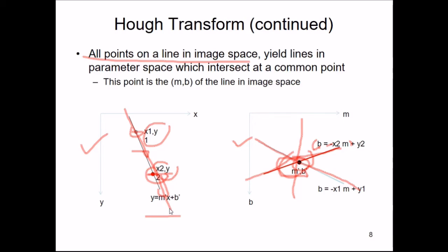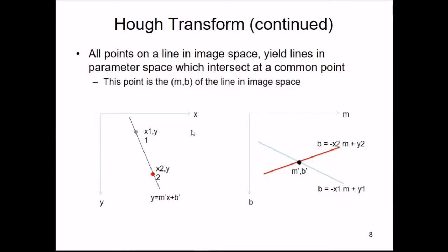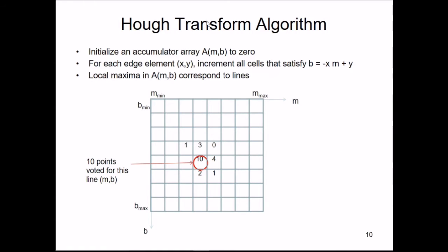This is the simple idea of Hough transform — how simple it is to find a line or a curve. The Hough transform algorithm first initializes an accumulator array A(m, b) — this is the accumulator array with axes M and B — to all zeros.